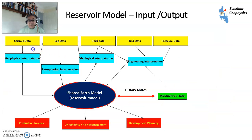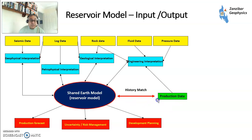So what goes into a model? You've got seismic data and geophysical interpretation, log data with petrophysical interpretation, geological interpretation, and fluid data — pressure, volume, temperature. All of that is put together in something called the Shared Earth Model. Then you will have production data through time and you will do something called a history match. What comes out is your production forecasts — how much you're going to produce under different scenarios — which you can use to manage risk and uncertainty, development planning, first-phase development, and redevelopment later in the field life.